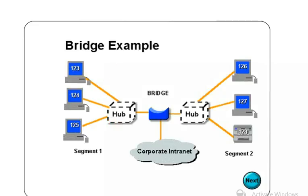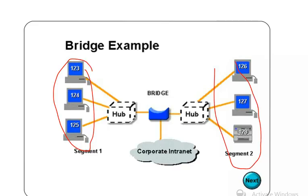For example, consider a large LAN with two segments. Here we have one segment, here we have another segment, and in between them sits a bridge. The bridge divides the collision domain between the two segments.